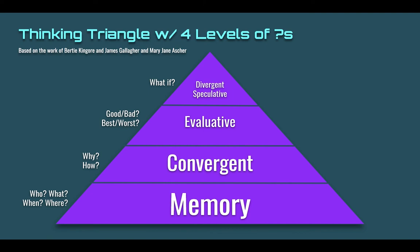Then we jump up to the convergent piece. These are around the analysis level of Bloom's Pyramid. We're asking kids to put facts together in order to come to a correct answer — a why or a how question at the analysis level. Notice that I am framing these as questions. Where you're really going to want to focus on adding depth and complexity is in how you ask questions of kids and the kinds of questions you ask.